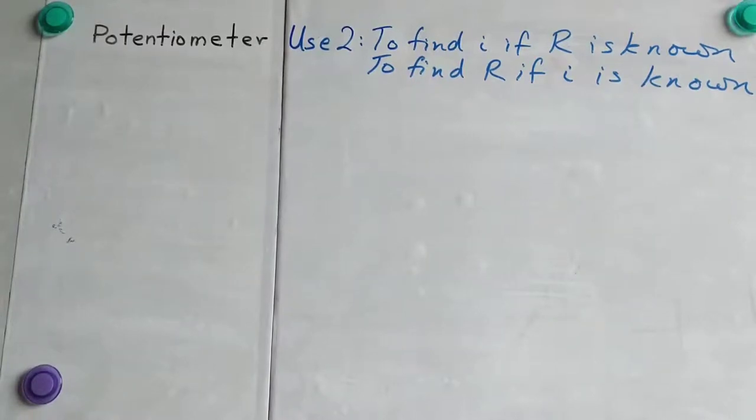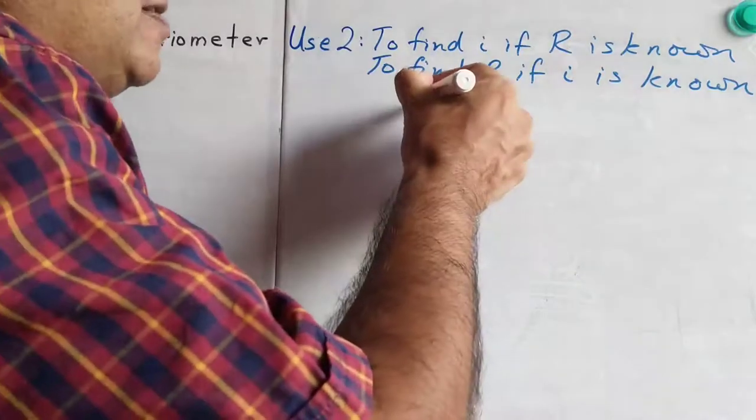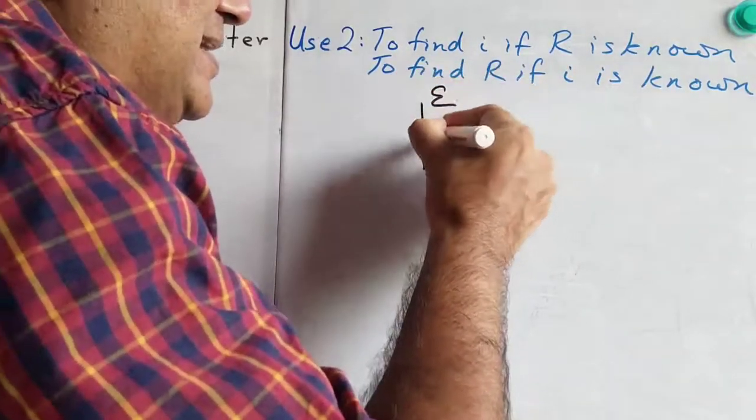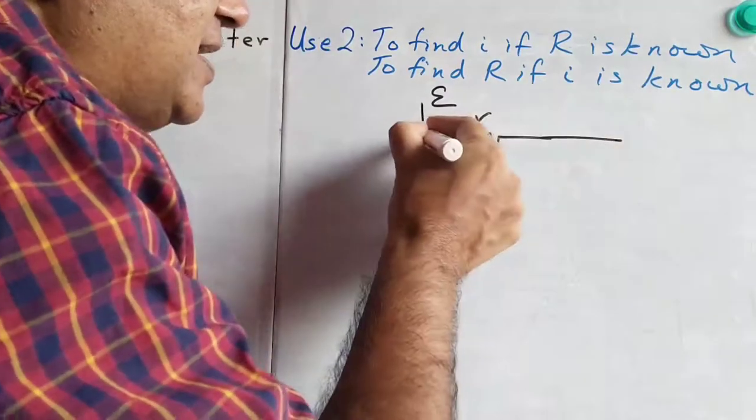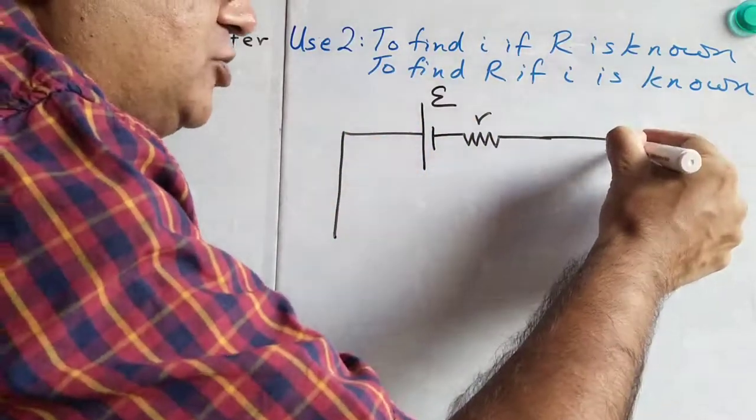We have a potentiometer, which is having a cell of EMF E, internal resistance small r, and this is connected to a potentiometer wire.